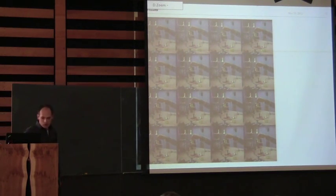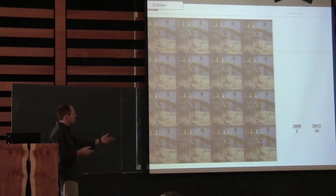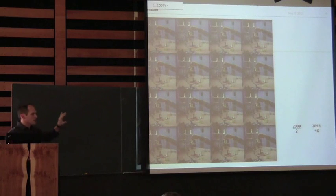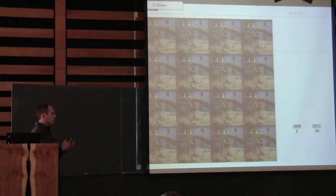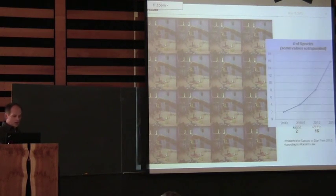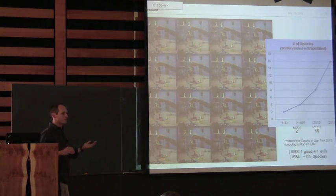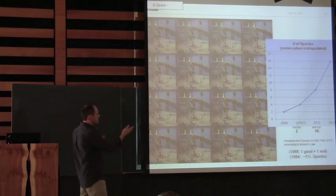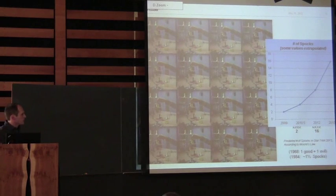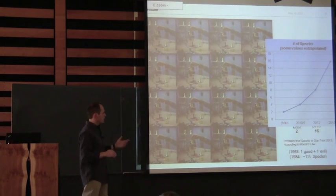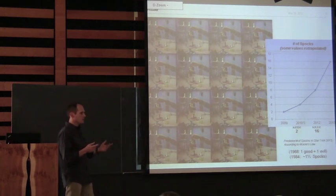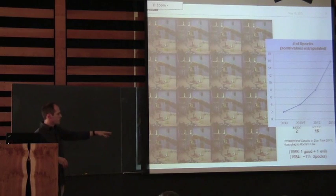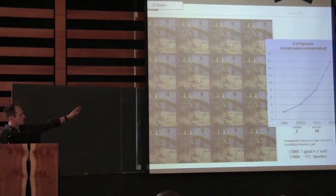In this diagram I've got them all looking exactly the same — maybe that's my poor Photoshop skills. We have 16 Spocks here. If you recall the last Star Trek movie, there were two concurrent Spocks. So I predict the next movie will have 16 Spocks — that's based on Moore's Law. It's doubled three times, so we should have 16 Spocks for the next movie.